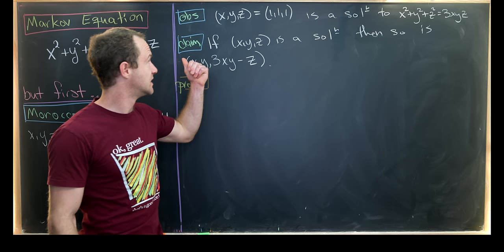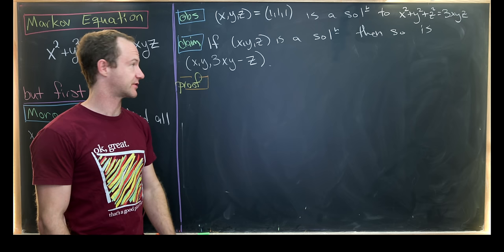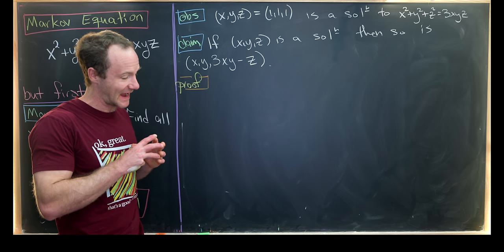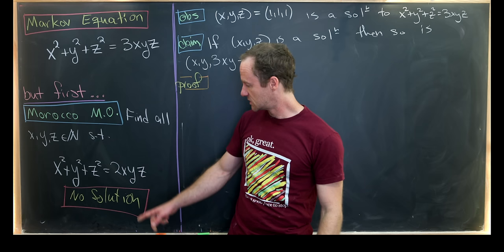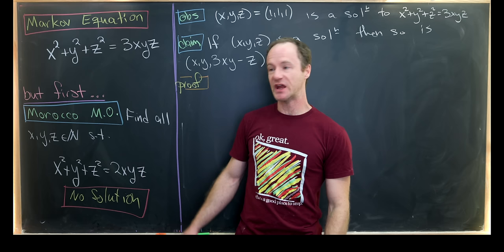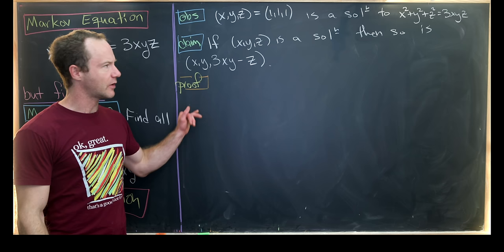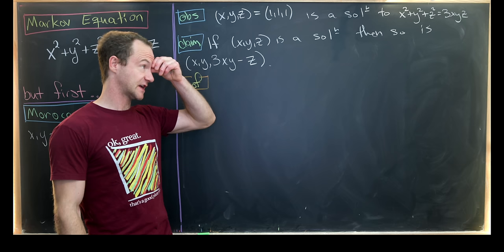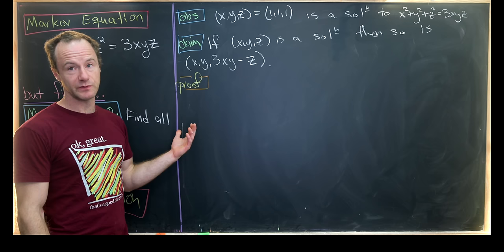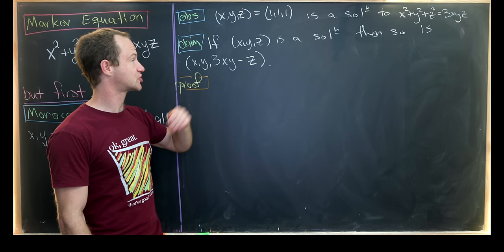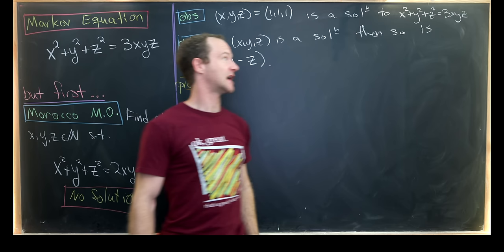Now we're ready to look at our Markov equation, our main goal here. And let's start with the kind of trivial observation that the triple (1, 1, 1) is a solution. That's because one plus one plus one is three. So pretty easy stuff. Now we're going to prove the following claim which will give us more solutions. In fact, it'll give us infinitely many solutions which is interesting because our warm-up problem which was quite similar had zero solutions. So this easy change from two to three changed the number of solutions from zero to infinitely many.